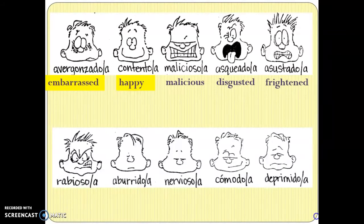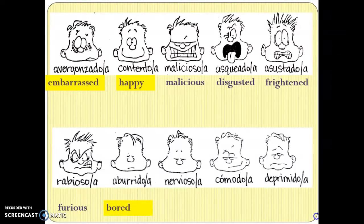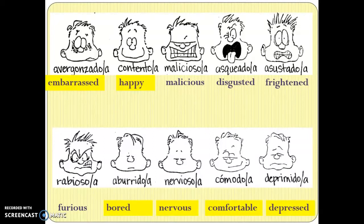'Rabioso' means rabid or furious — you don't need to know that one, but it goes beyond mad. 'Aburrido' means bored. It's not a cognate, but it looks like the word burrito — and if you ate burritos every day, you would be bored with your lunch. 'Nervioso' is a cognate meaning nervous. 'Cómodo' is kind of cognate-ish because it means comfortable, and the first three letters are the same. 'Deprimido' is a cognate meaning depressed. You need to know the last four in that row, so make sure those are highlighted.